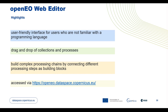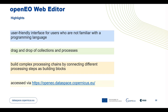Starting with its main concept, the Web Editor is a user-friendly interface for users who are not familiar with programming languages, so that they can carry out Earth Observation data processing tasks, such as querying available data, defining processing workflows, executing processes, and many more. A simple drag-and-drop concept is involved, where users can select their preferred data collection and required process, and simply drag it to the main process editor. It also allows users to build complex processing chains by connecting different processing steps as building blocks, and provides options to specify parameters and input data for each of those steps.